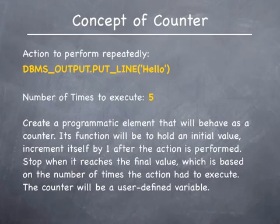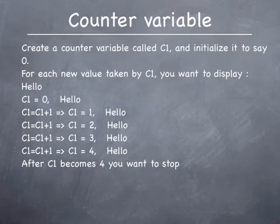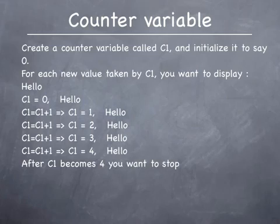For each iteration of the loop, the action will be performed. On this slide is an explanation of what must be done as far as defining an initial value for the counter, modifying its value using an increment statement, and stopping when the final value of the counter is reached. Say we create a variable called C1 that should behave as a counter. It might be a good idea to always initialize it to a value of 0 during declaration.